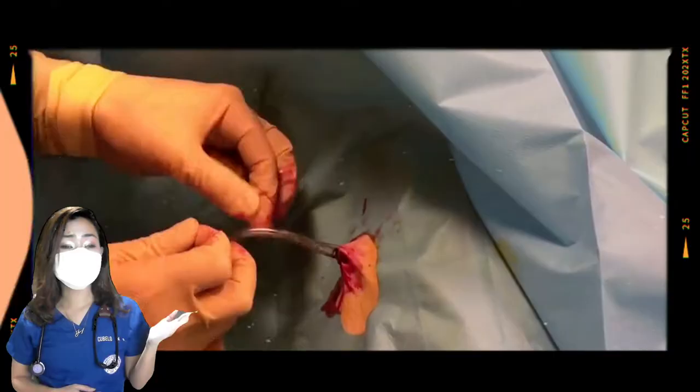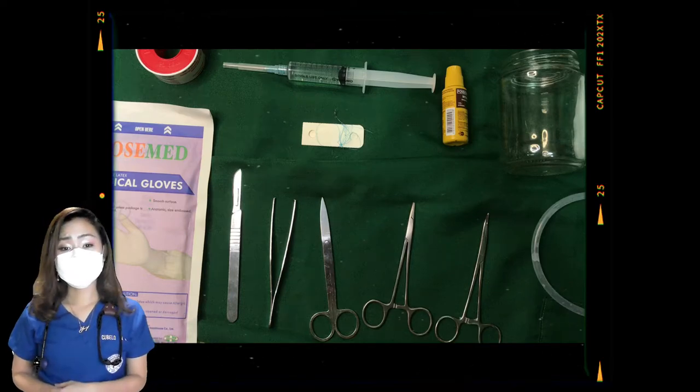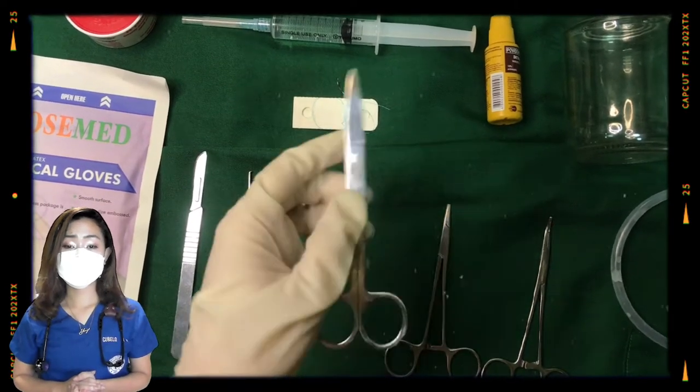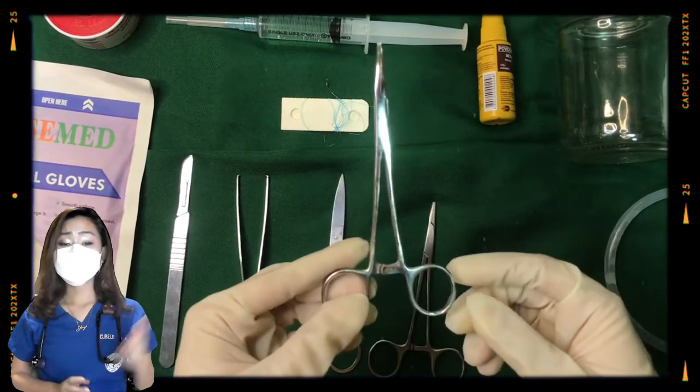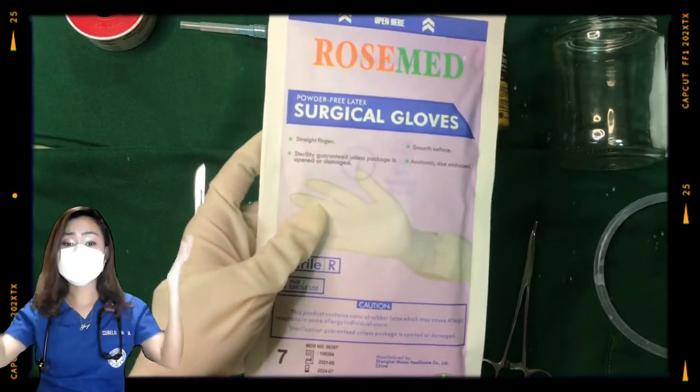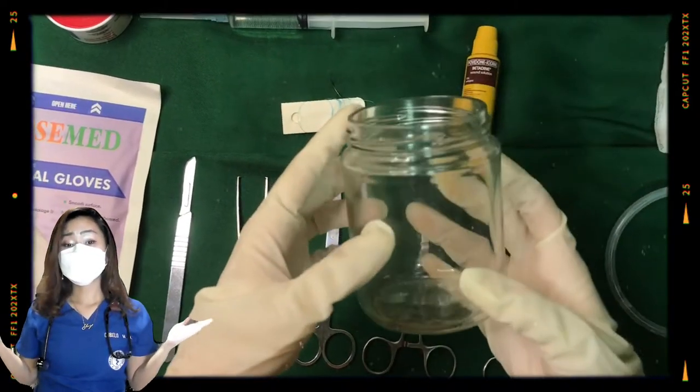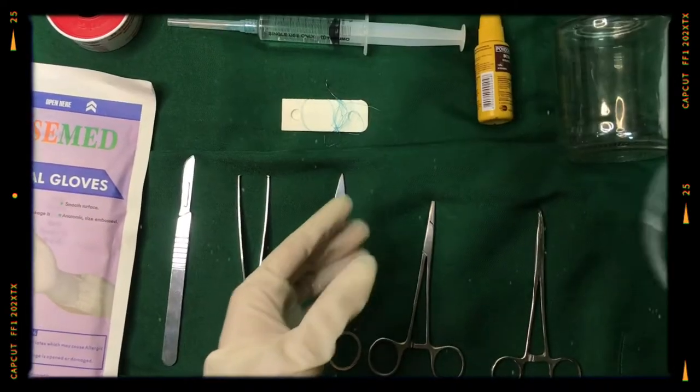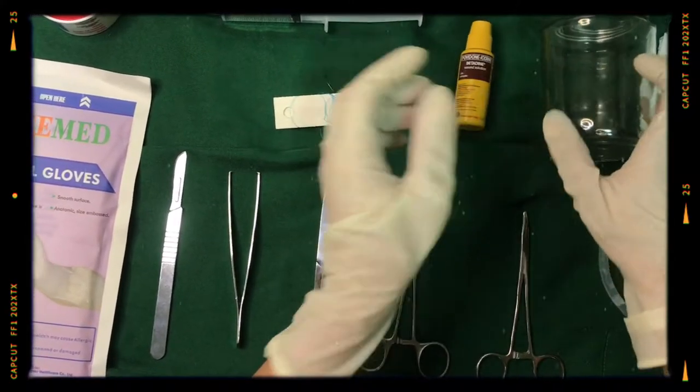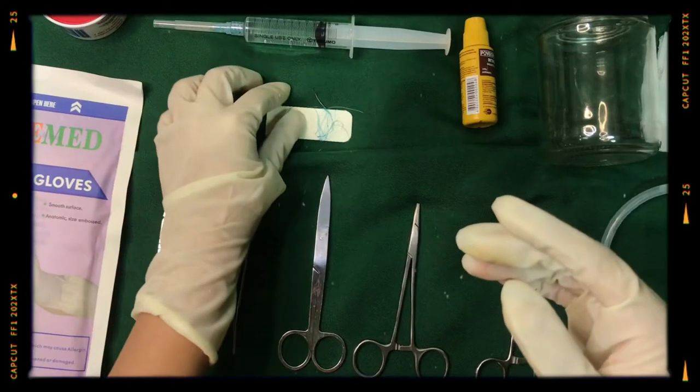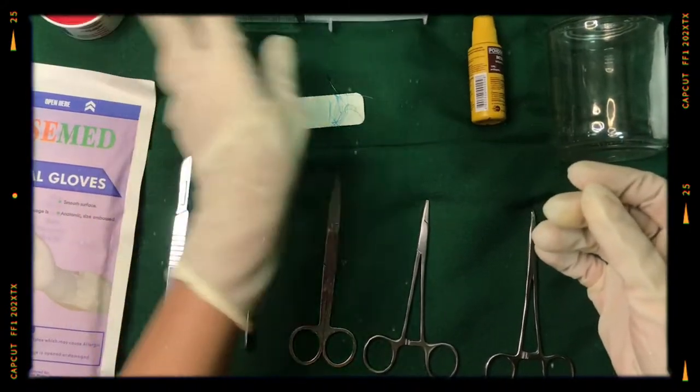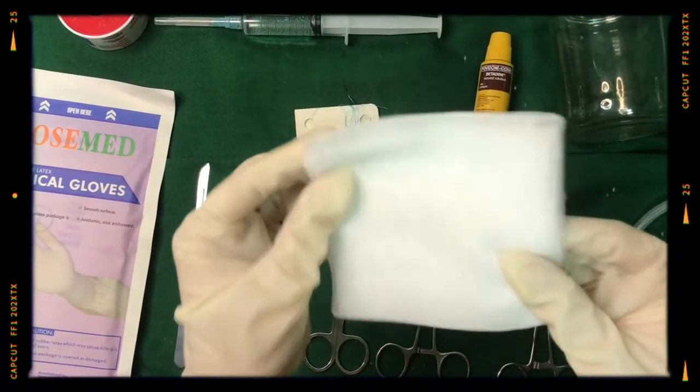For the equipment, we'll be using a cut-down set, such as a scalpel, forceps, surgical scissors, needle holder, curved kelly, sterile gowns, sterile surgical gloves, a glass bottle system with underwater seal, chest tubes, povidone iodine for antiseptic, sterile sponges, silk suture with curved cutting needle, a syringe with local anesthetic, vaseline gauze, and plaster.